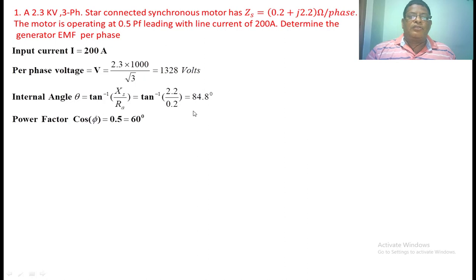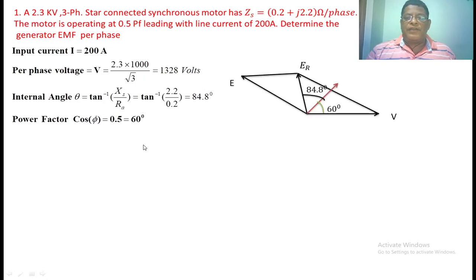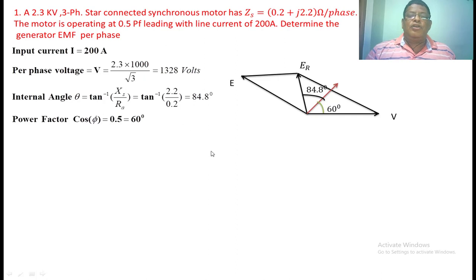The power factor is given as 0.5 power factor leading. Cos φ equal to 0.5, so φ equal to 60 degrees. If you draw the phasor diagram, this is V and this is E. Since the power factor is 0.5 leading, the magnitude of E is greater than V.